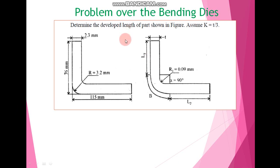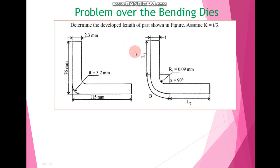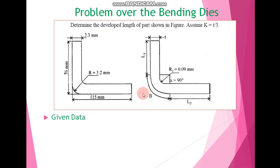The developed length means the addition of L1 plus B plus L2. In this problem we have to find the dimension L1, the dimension B which represents the bending allowance, and the dimension L2 after the bending operation.